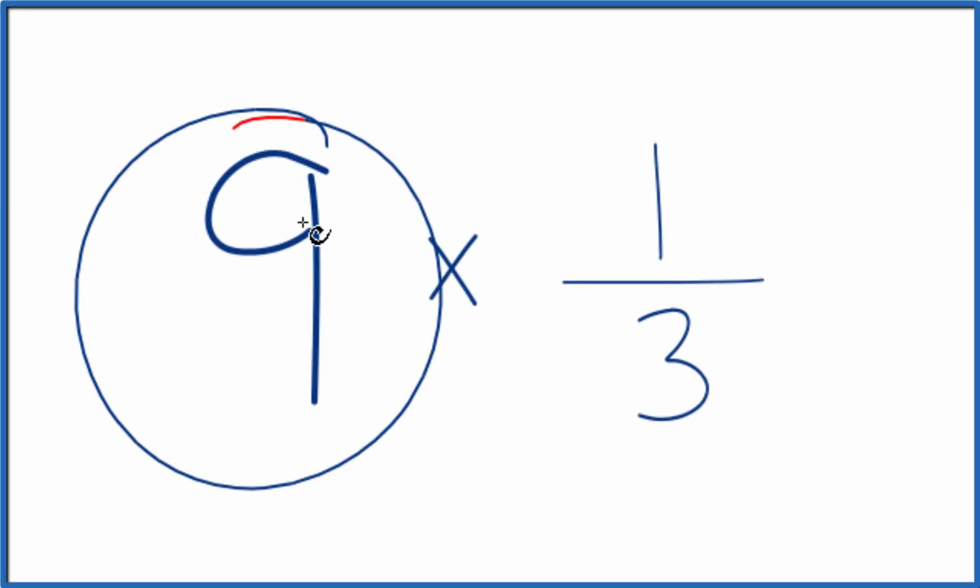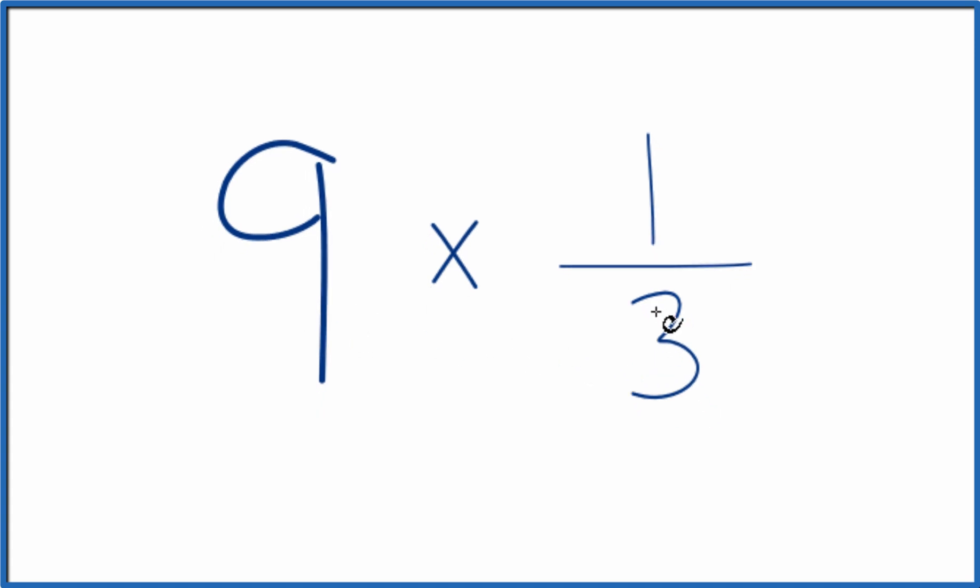So, how do you multiply 9 times 1 3rd? Well, you could just add up 1 3rd plus 1 3rd, do that 9 times. That would give you the correct answer for 9 times 1 3rd.